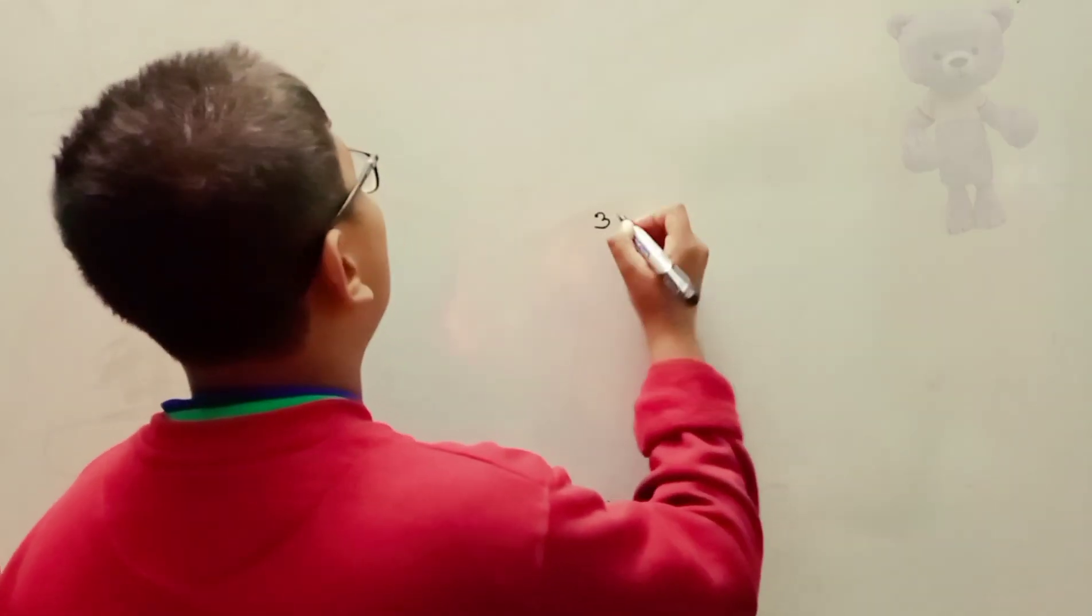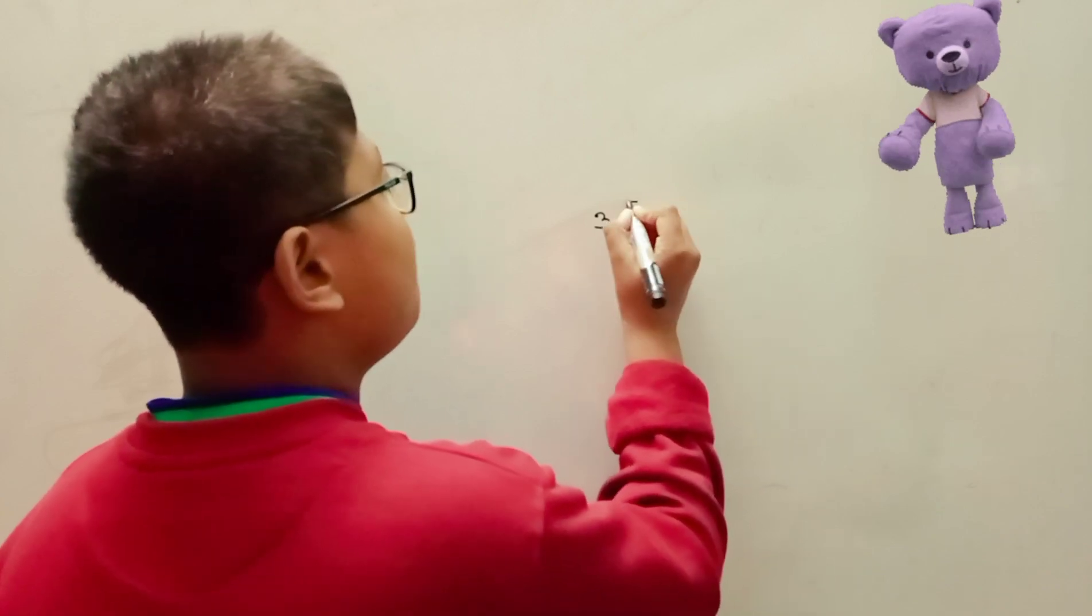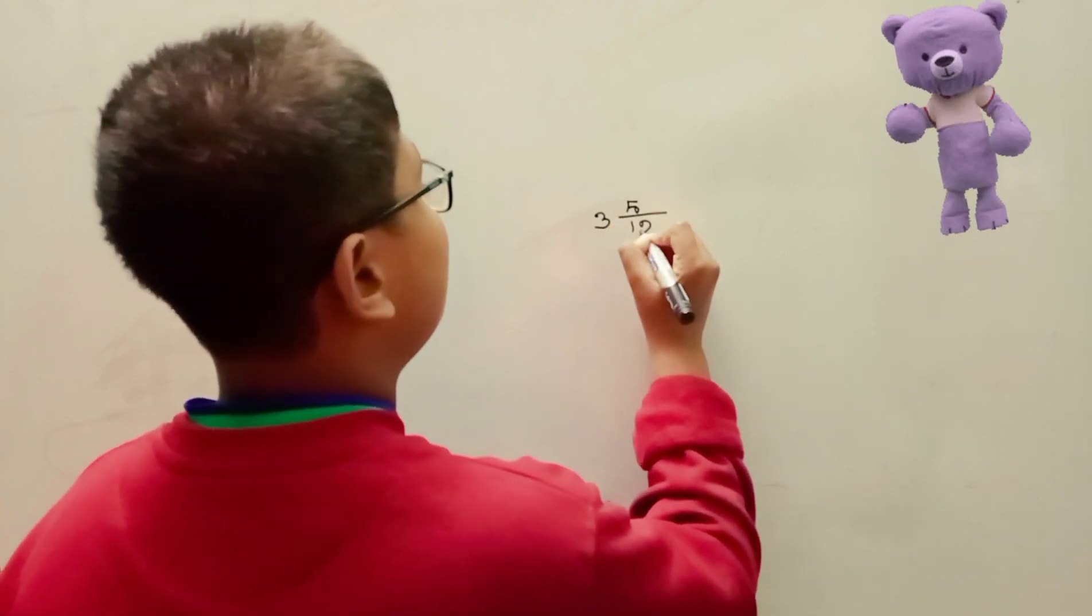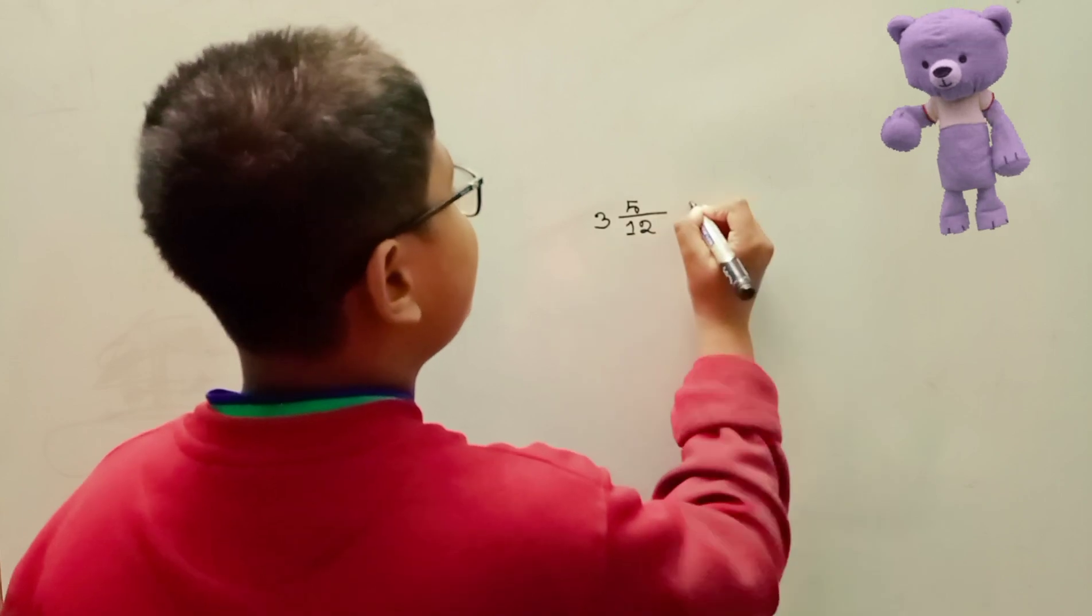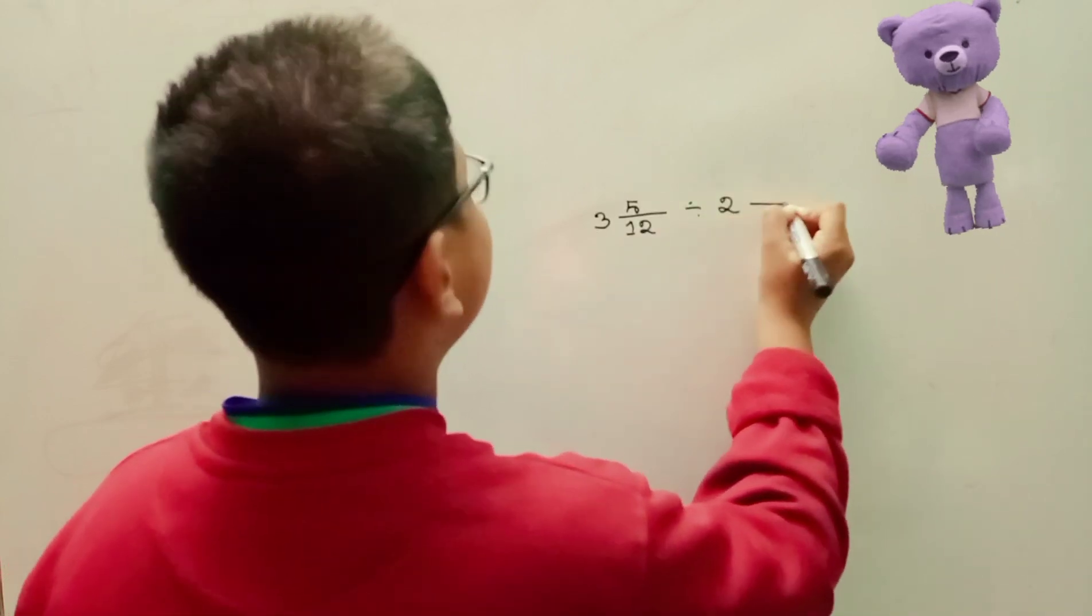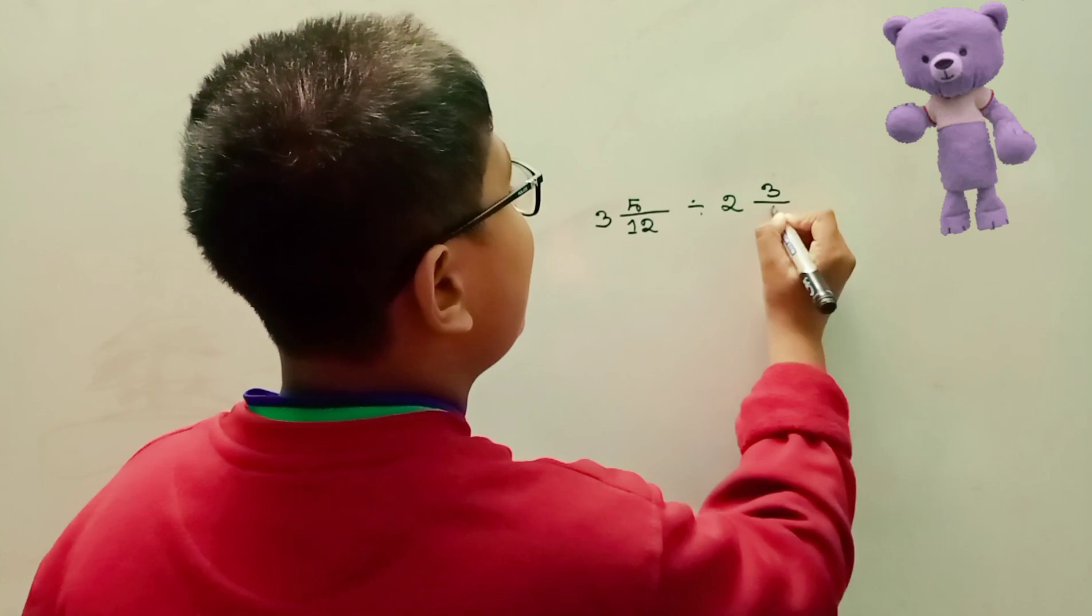Look at the board. 3 whole 5 over 12 divided by 2 whole 3 over 8.